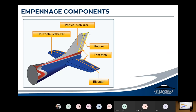Looking closely at the empennage, everybody jumps right to the rudder and elevator — the movable sections — but forward of those are other critical components. When we talk about pitch, the first thing the air reaches is the horizontal stabilizer. The horizontal stabilizer does not move; it stabilizes the airplane. Like the feathers on an arrow, it keeps the plane from pitching up or down. Attached to the horizontal stabilizer is the elevator, which is controlled by your control yoke, allowing you to pitch back and forth and go up and down.